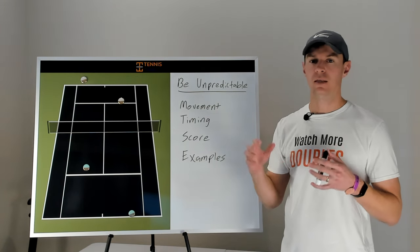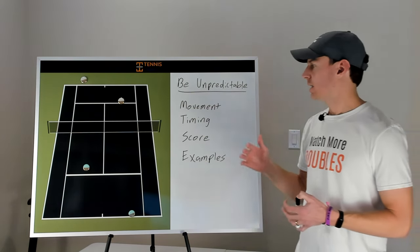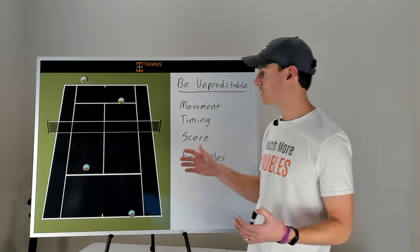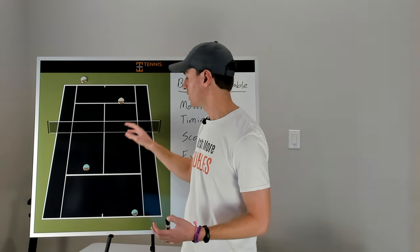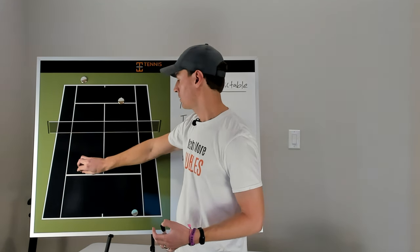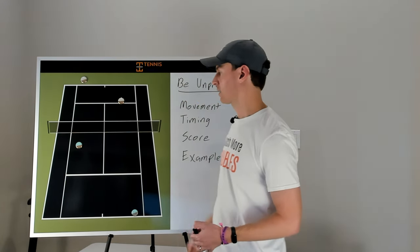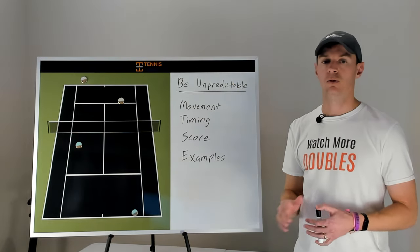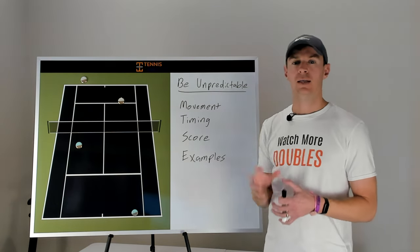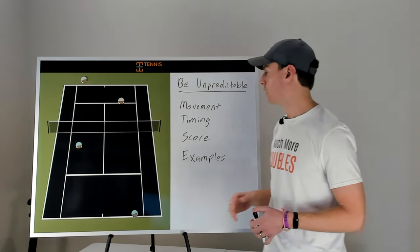One of the things that frustrates me the most when watching club level doubles or USTA matches is that net players do the same exact thing every time. There's a cross-court rally, maybe even a down-the-line rally, and the net player moves forward, moves back to cover the alley, then moves back to the service line and repeats. That is not what the best doubles players in the world do. We're going to talk about how to be unpredictable in an intentional way that will help force more errors from your opponent and help your partner at the baseline.